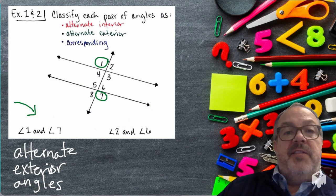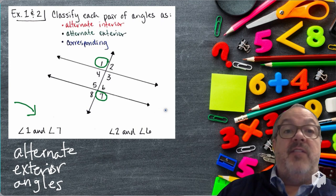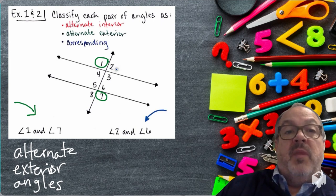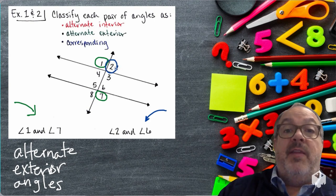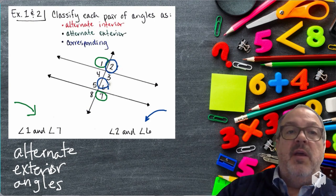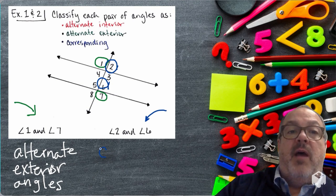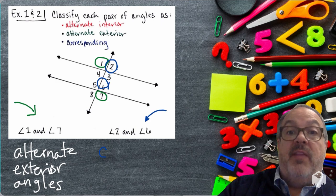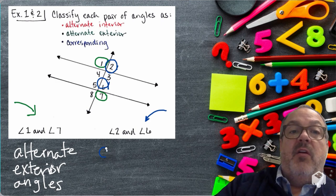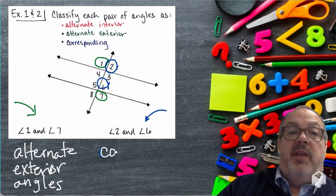Now let's look at Angles 2 and 6. Notice that Angles 2 and 6 are in the same position on each of the two lines. If you have angles that are in that same position, they're called corresponding angles.